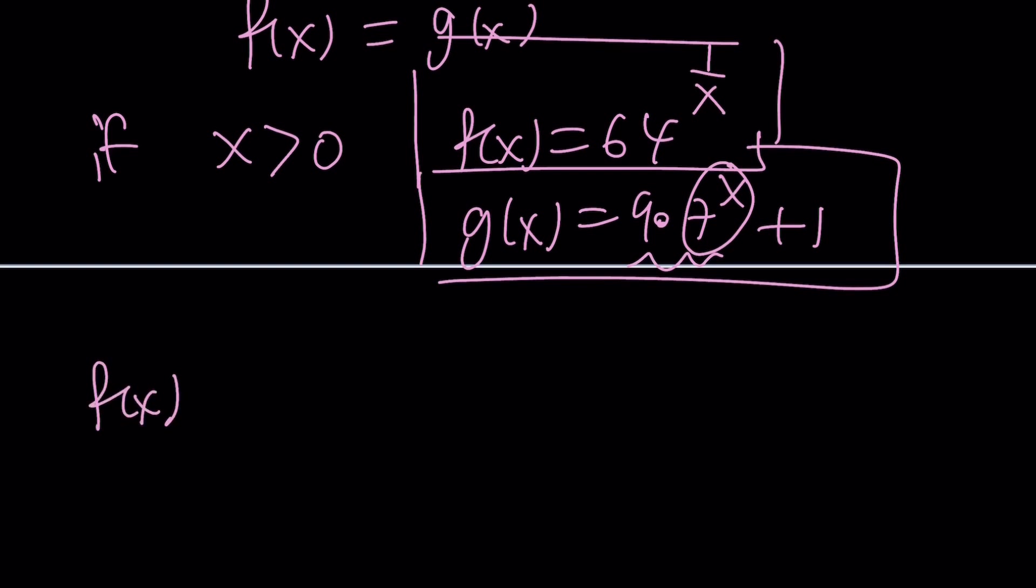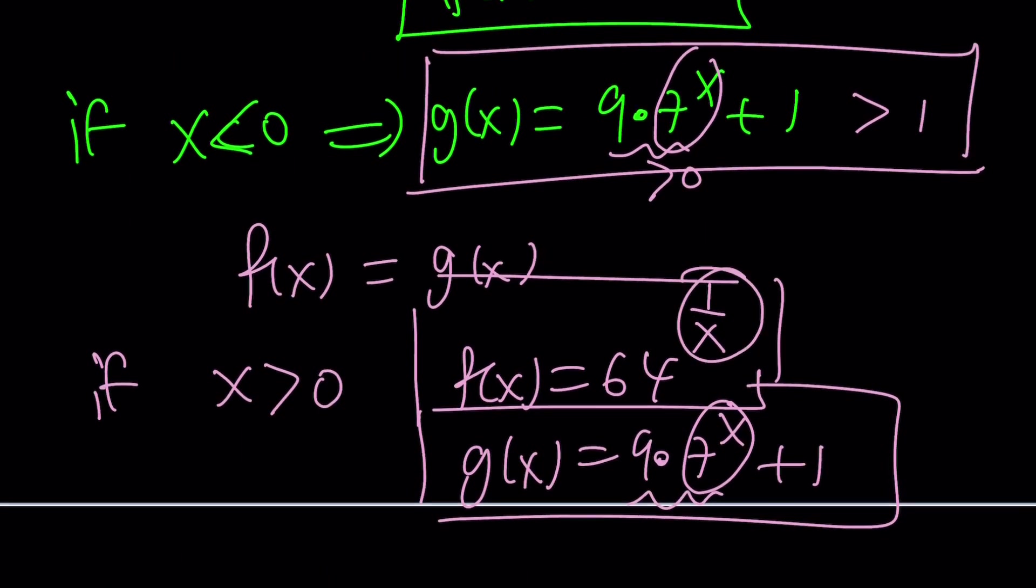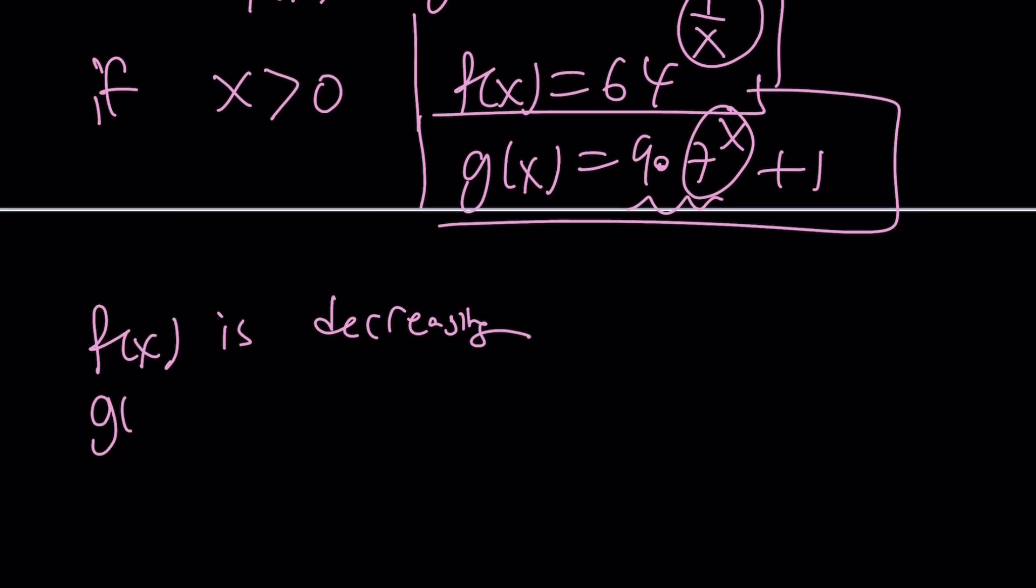The reason being, f of x is decreasing. Why? Because as x increases, 1 over x is going to decrease, and 64 will be raised to, like, 1 half, 1 third, 1 fourth. You're going to get a number that is smaller and smaller. So, f of x is decreasing. What about g of x? g of x is definitely an increasing function because of 7 to the power of x times 9 plus 1.